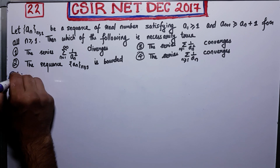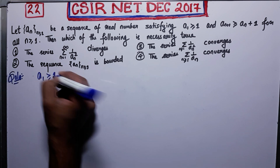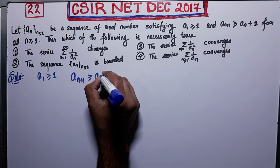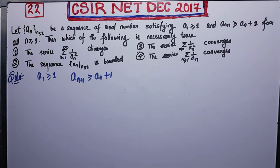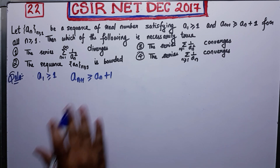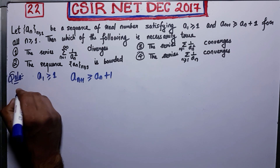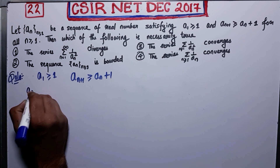Firstly, see what is given to you. You are given a sequence with its first term greater than or equal to 1. Also, a_{n+1} will be greater than the preceding term by 1, meaning a_{n+1} is greater than or equal to a_n plus 1. The first strategy is to think of an example which satisfies these two conditions — that will give you a hint. I am taking the simplest example: a_n = n.